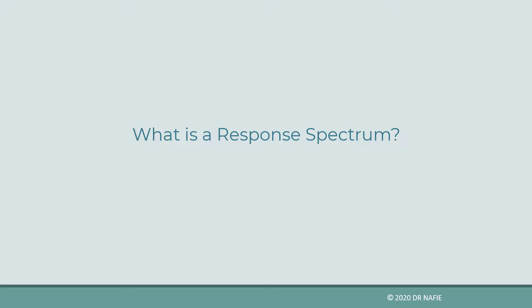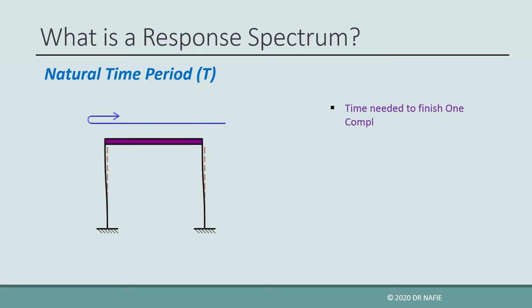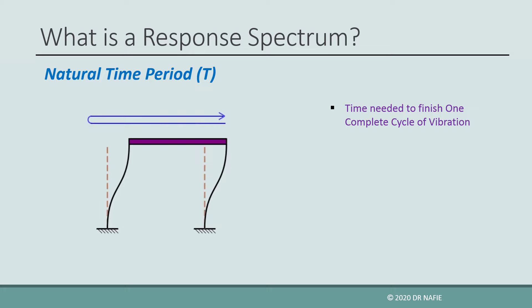In order to discuss the response spectrum, we need first to understand what is a natural period of a structure. If we push a structure horizontally, then we remove the acting force to allow the structure to vibrate freely. The time needed by the structure to make a complete free vibration cycle is called the natural time period. The value of the natural time period depends on the properties of the structure, mainly its mass and stiffness.